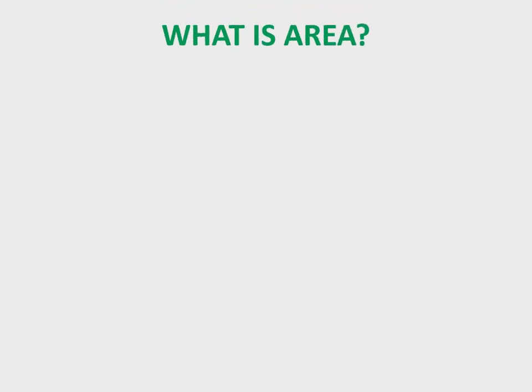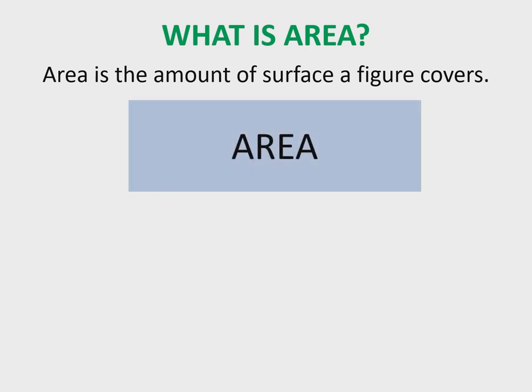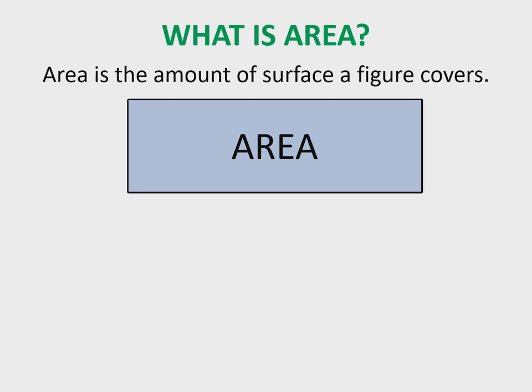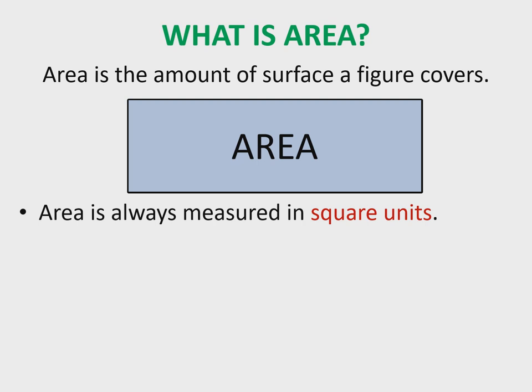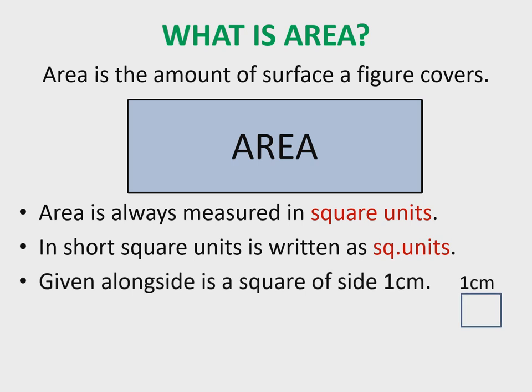Area is the amount of surface a figure covers. The area of a figure is the number of unit squares that cover the surface of a closed figure. So area is always measured in square units. In short, square units is written as sq. units.